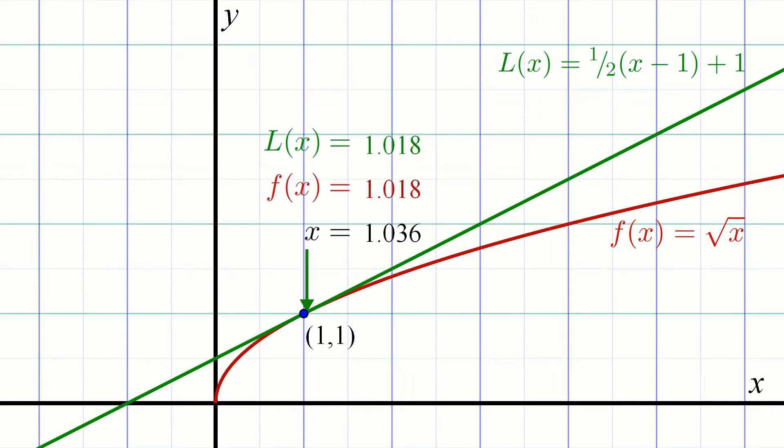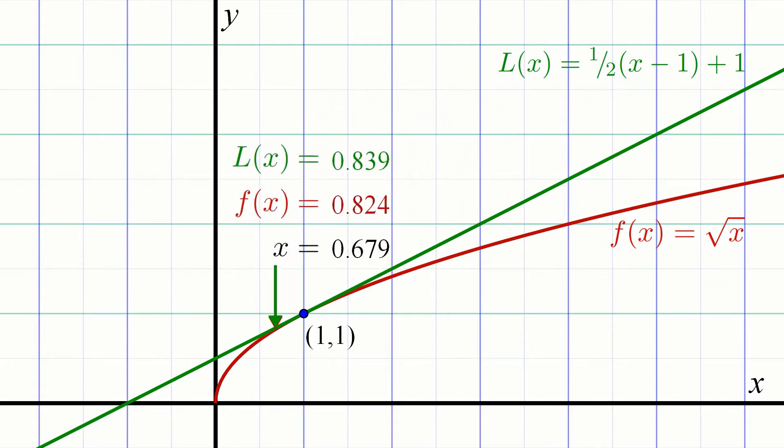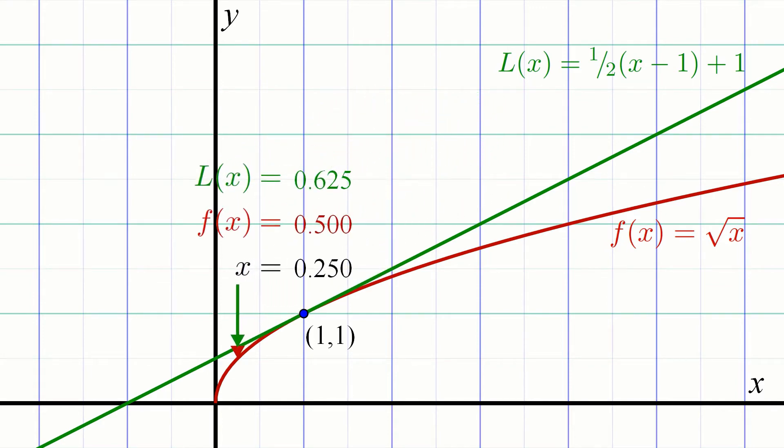One of the reasons this is so important is it gives us a way to approximate the value of a complicated function near a point whose coordinates we know exactly.